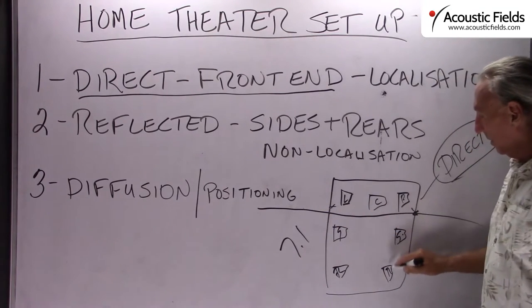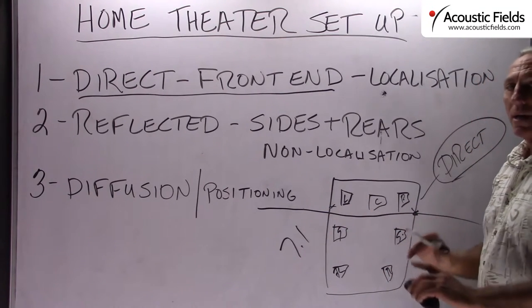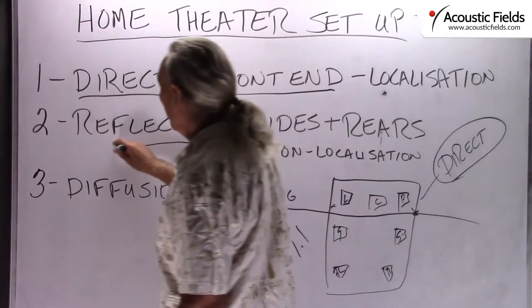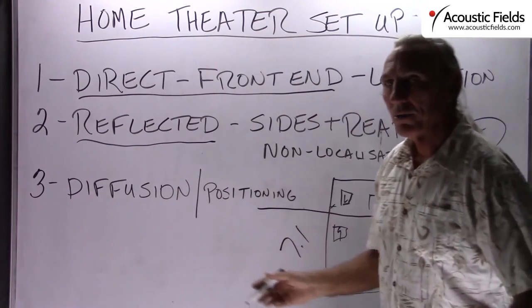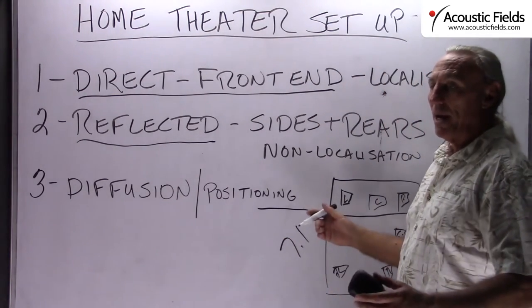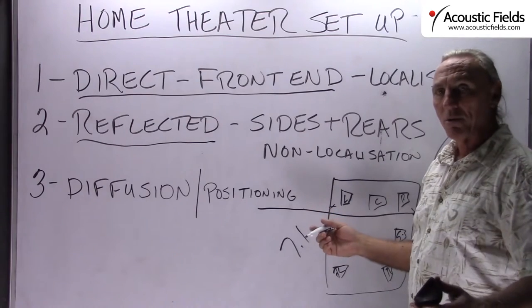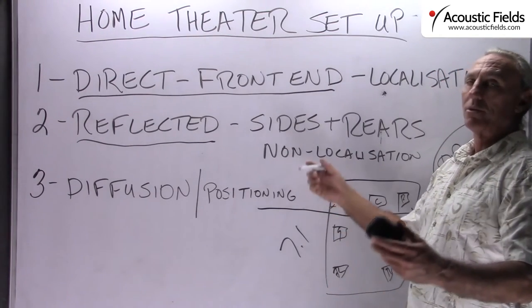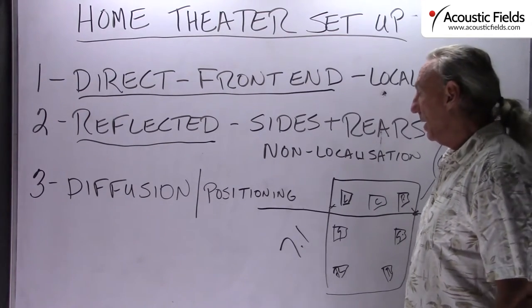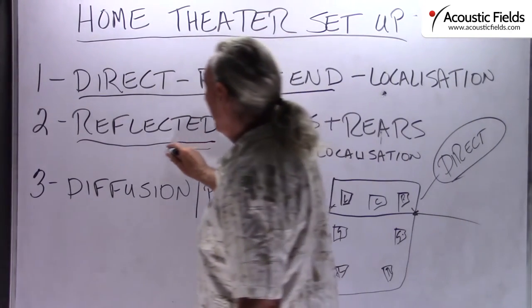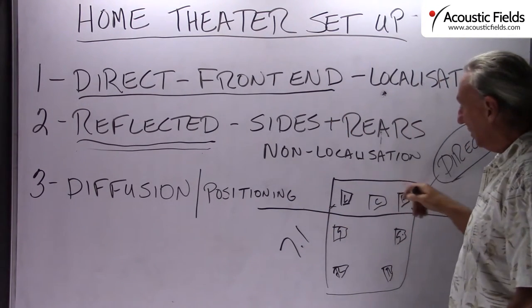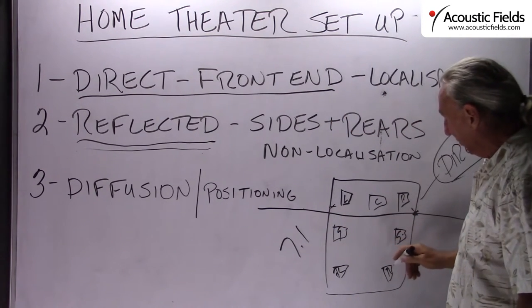When we get to the rear of the rooms — for the sides and the rear — it's a whole different story. Now we're talking about reflected energy, because we're trying to create a space that's not there. We're trying to create an illusion, a psychoacoustic illusion, that there's things going on behind us that really aren't. And that's all done with reflected energy. So we have to keep the two parts of the room separate: this is direct, the front, and this is all reflected.